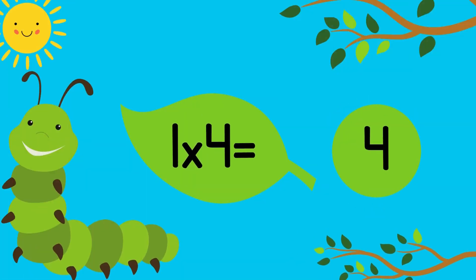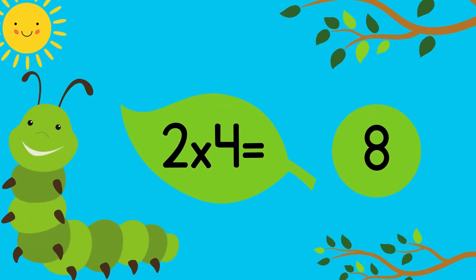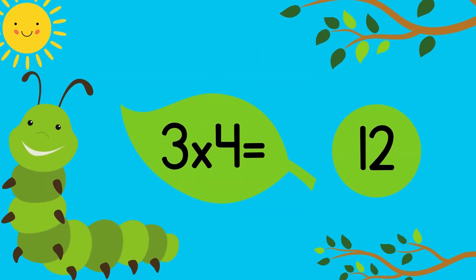1 times 4 equals 4. 2 times 4 equals 8. 3 times 4 equals 12. 4 times 4 equals 16.